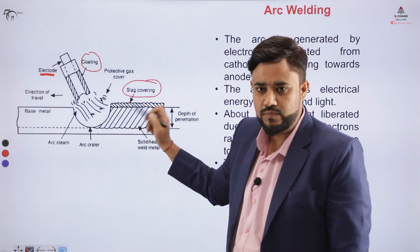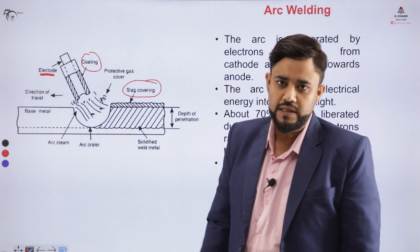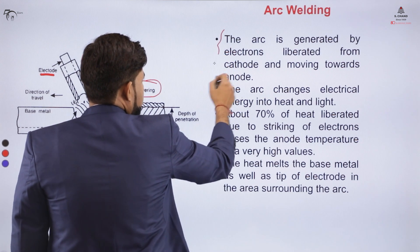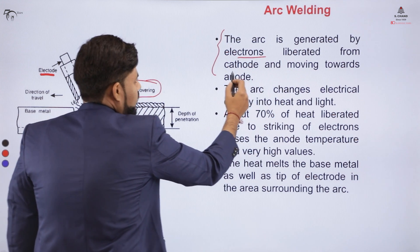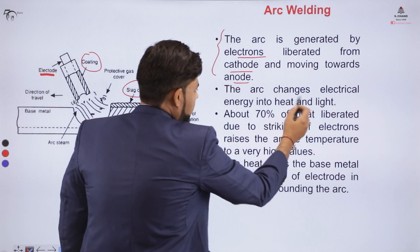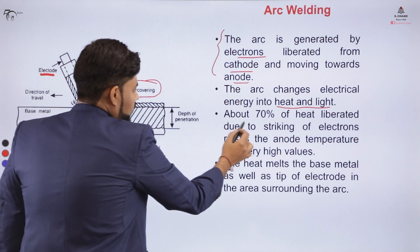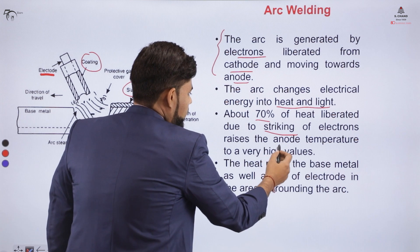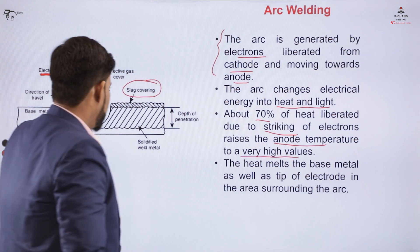The slag layer is removed with the help of a chipping hammer, and ultimately a weld bead is produced. The arc is generated by electrons liberated from the cathode, which move toward the anode and ultimately convert into heat and light. About 70% of the heat is liberated due to the striking of electrons, raising the temperature to a very high value.